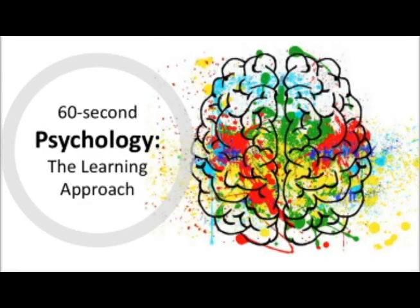The learning approach is a branch of psychology that focuses on the idea that behavior is a learned response to environmental stimuli and that behavior can be learned through observation and imitation. The key theories of the learning approach include classical conditioning, operant conditioning, and social learning theory.